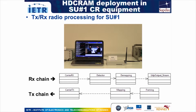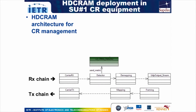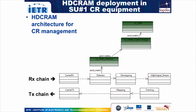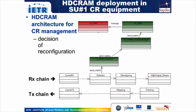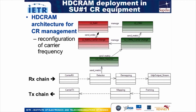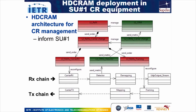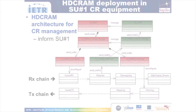Here in white are the operators of the transceiver processing chain of a secondary user equipment. First, HDCRAM receives information on the presence of a primary user from a detector. If a primary user is detected, the cognitive management side orders the configuration management side to change frequency, which impacts it down towards the operators that should be reconfigured. Operators to be changed are carrier frequency and mapping, so that a carrier frequency jump order is transmitted to the base station too.